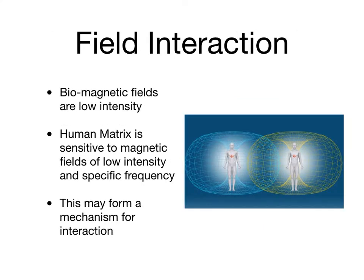What about field interactions? Even though biomagnetic fields are very low intensity, the human matrix is highly sensitive to magnetic fields — but not just any magnetic fields. The human matrix is sensitive to low intensity fields of a specific frequency, and that may form a mechanism for information interaction between two people's fields.